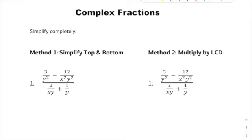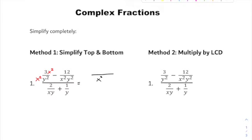The first method is simplifying the top and bottom separately. In the numerator you have 3 over y² minus 12 over x²y² — treat that like a problem and make common denominators so you can subtract and combine into one fraction. To make common denominators, multiply the first term by x², so the numerator becomes 3x² minus 12 over the common denominator x²y².